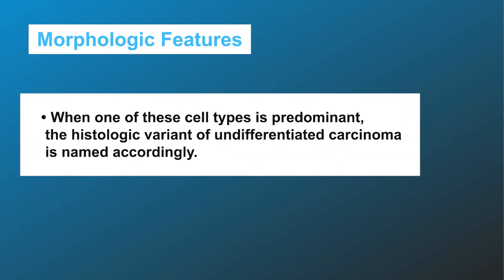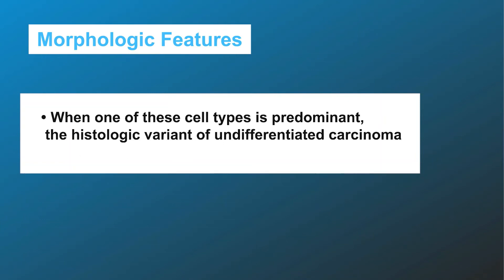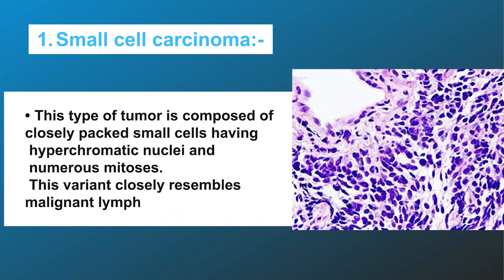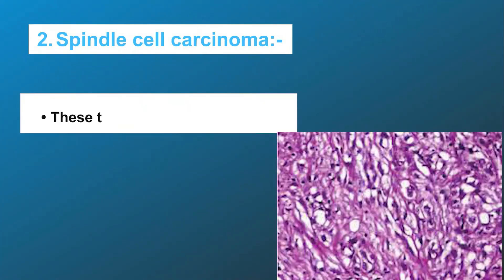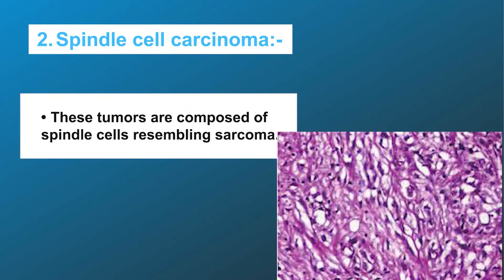When one of these cell types is predominant, the histologic variant of undifferentiated carcinoma is named accordingly. There are three histologic variants. One: small cell carcinoma — this type is composed of closely packed small cells having hyperchromatic nuclei and numerous mitoses. This variant closely resembles malignant lymphoma.